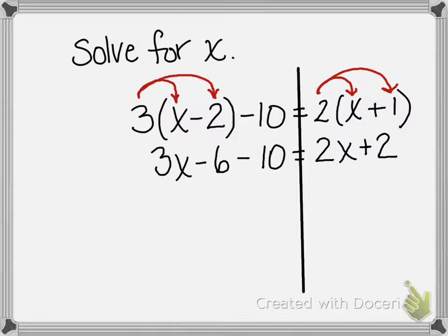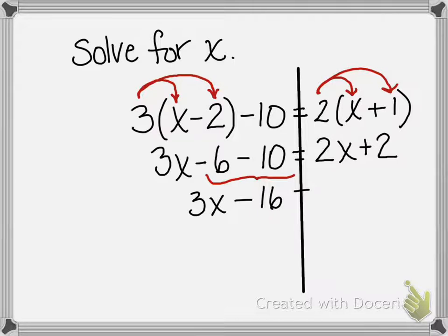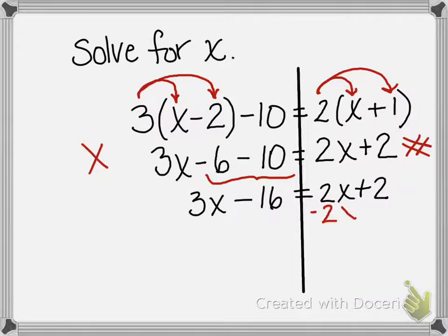I'm going to wait and give you guys a few more seconds to solve that. I'm going to notice that negative 6 and negative 10 are on the same side of the equation, so I'm going to push them together. That gives me 3x minus 16 equals 2x plus 2. I'm going to make this my x side and this my number side, so I'm going to do two steps here in one — first I'm going to move this 2x over.